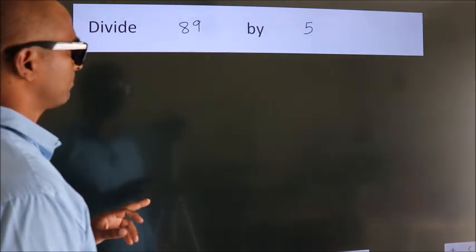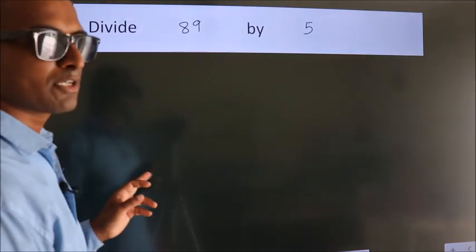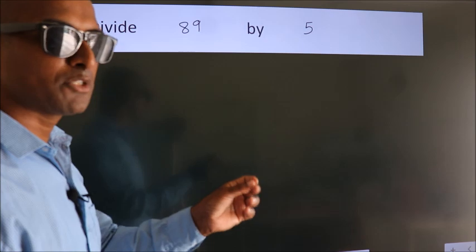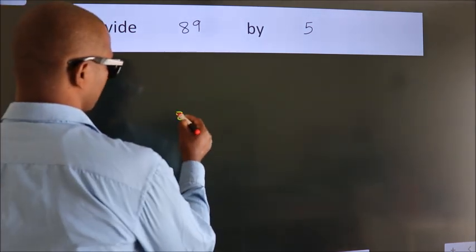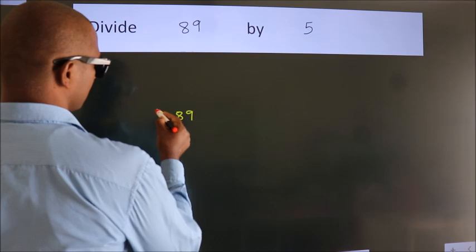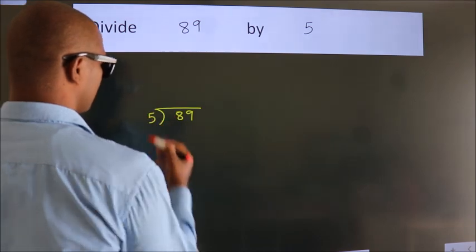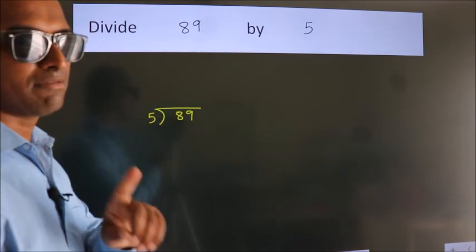Divide 89 by 5. To do this division, we should frame it in this way. 89 here, 5 here. This is your step 1.